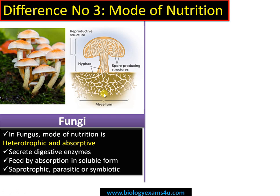Modes of nutrition in fungi include saprotrophic — feeding on dead and decayed matter — parasitic, or symbiotic in association with plants, like mycorrhizal association, or lichens, which are a symbiotic association of fungi and algae.